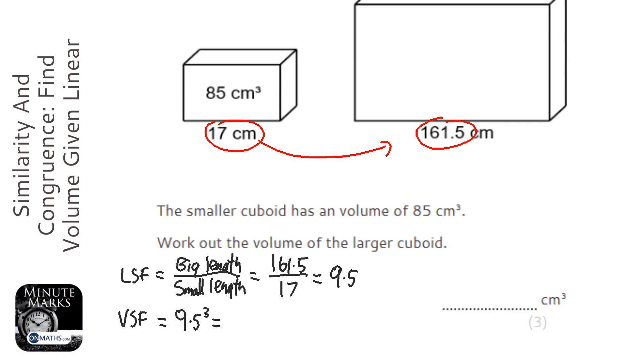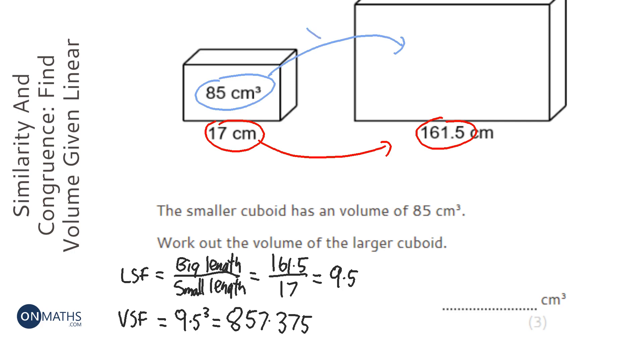So we're going to do 9.5 cubed and I get 857.375. That seems a really big number, but volume will grow much quicker than linear - than lines will. So that tells me what I need to times by to get to the bigger volume.